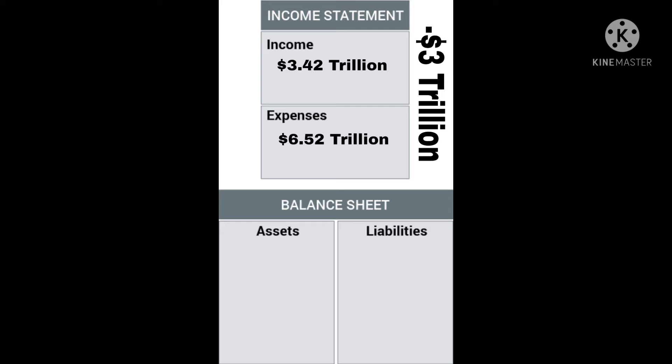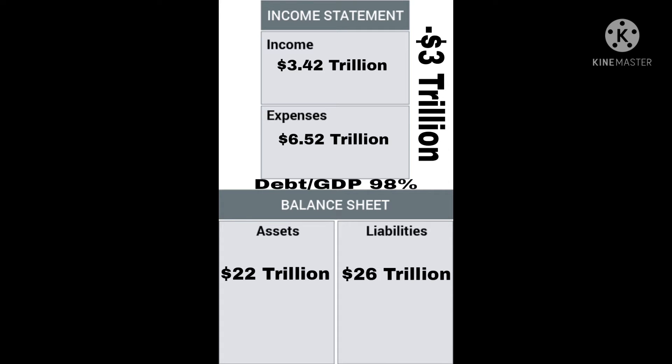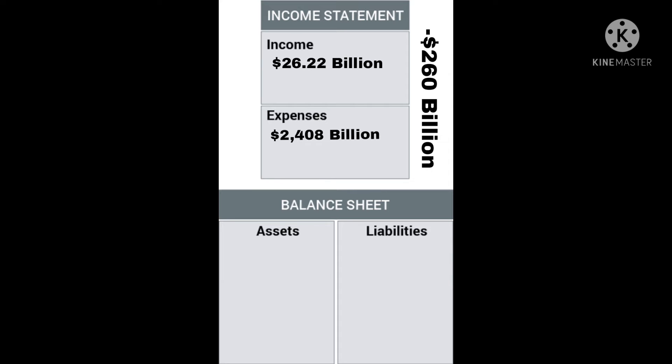...the cash flow for 2020 is negative: minus $3 trillion. After analyzing the GDP of $22 trillion and debt of $26 trillion, we come to know that the debt-to-GDP ratio is 98%. After analyzing the income of $220 billion and expense of $480 billion of India, we come to know that the cash flow for 2020 is...